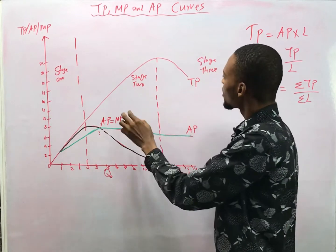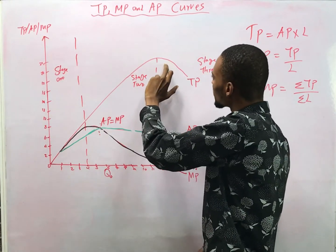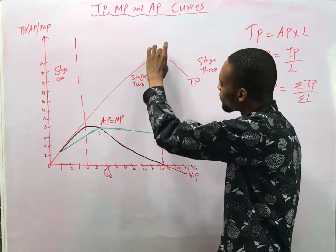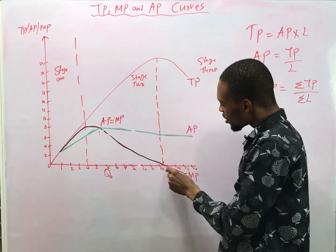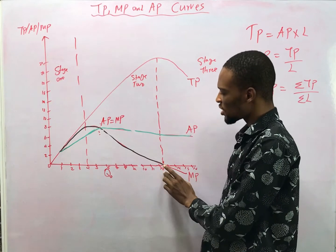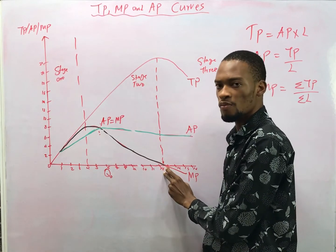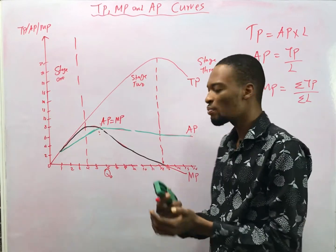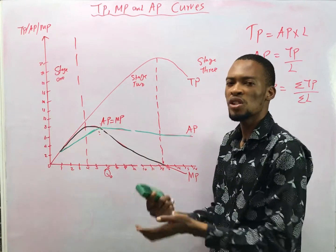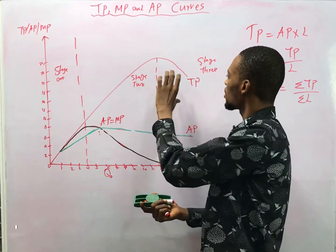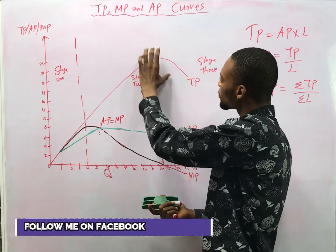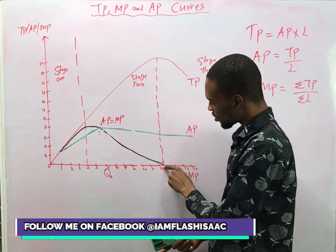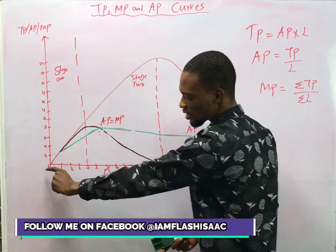Now look at this: as total product reaches its maximum value, marginal product gets to zero. So if you are asked what happens to marginal product when total product is at its maximum — when total product is maximum, marginal product equals zero.